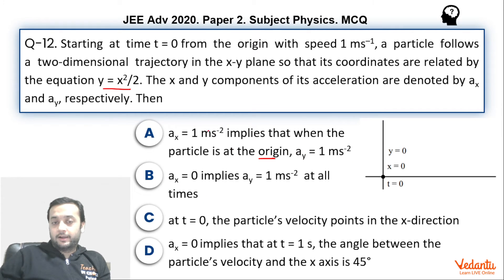On the other hand, here they are saying that ax equals to 1 implies that at origin ay equals to 1. But rather the truth is that ay will be equals to 1 at origin irrespective of the value of ax. Hence, option A was slightly ambiguous.